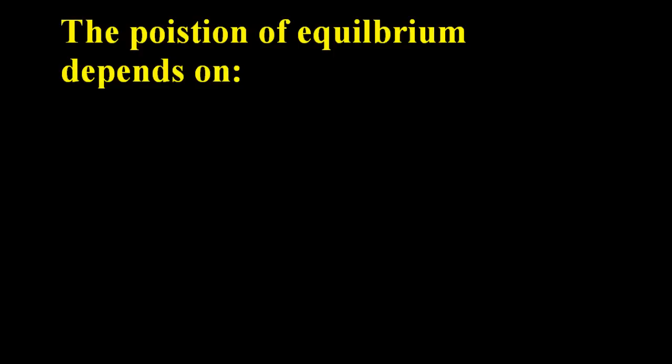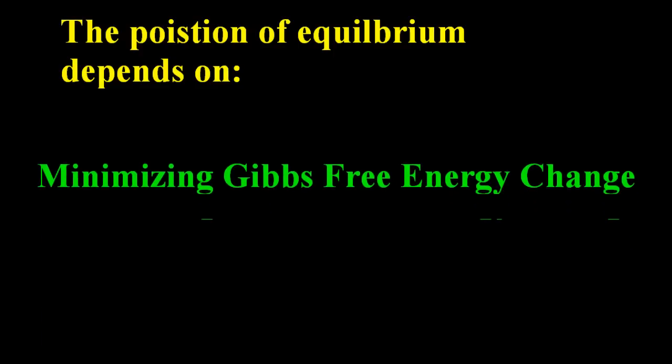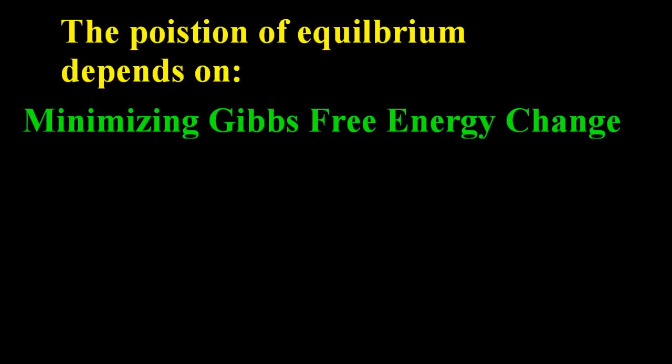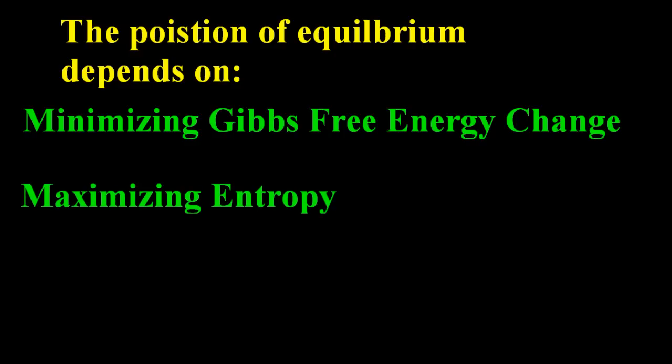So the position of equilibrium depends upon minimizing Gibbs free energy change and maximizing entropy. That seems to be as much as you need to know. And I trust the noose book on this. There are graphs like this in some of the other books. I'm not convinced that you need to know these graphs for the IB. I think that's more than you need to know. I trust noose.